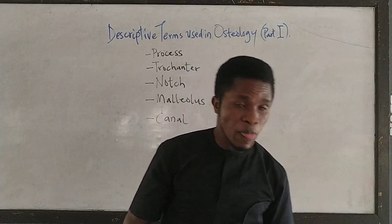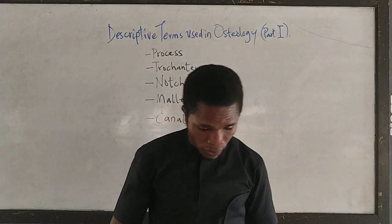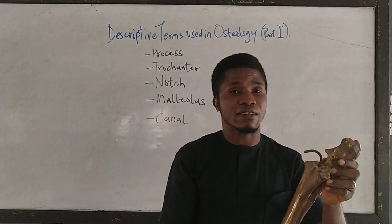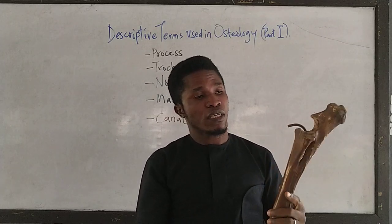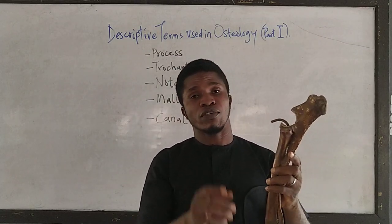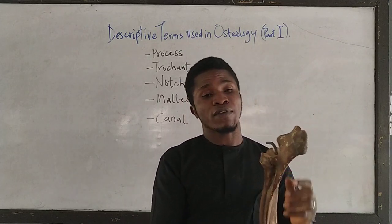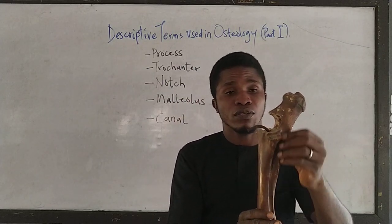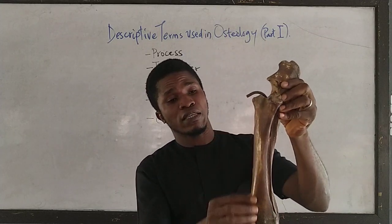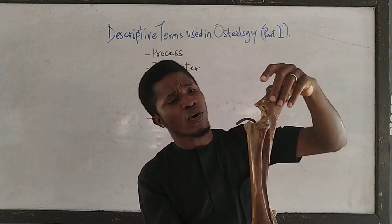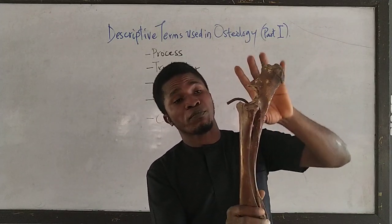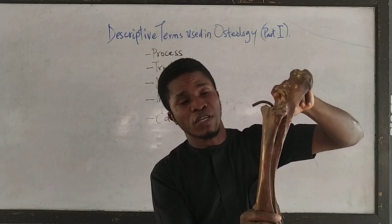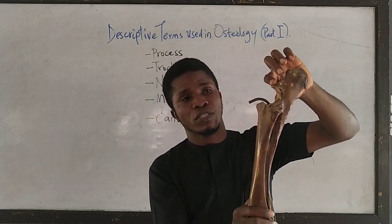The third term we would look at is the notch. A notch is an indentation at the edge of a structural surface. The example we have here is the semilunar notch. This is the ulnar bone and this is the radius. On the proximal extremity of the ulnar bone is where we have the semilunar notch.